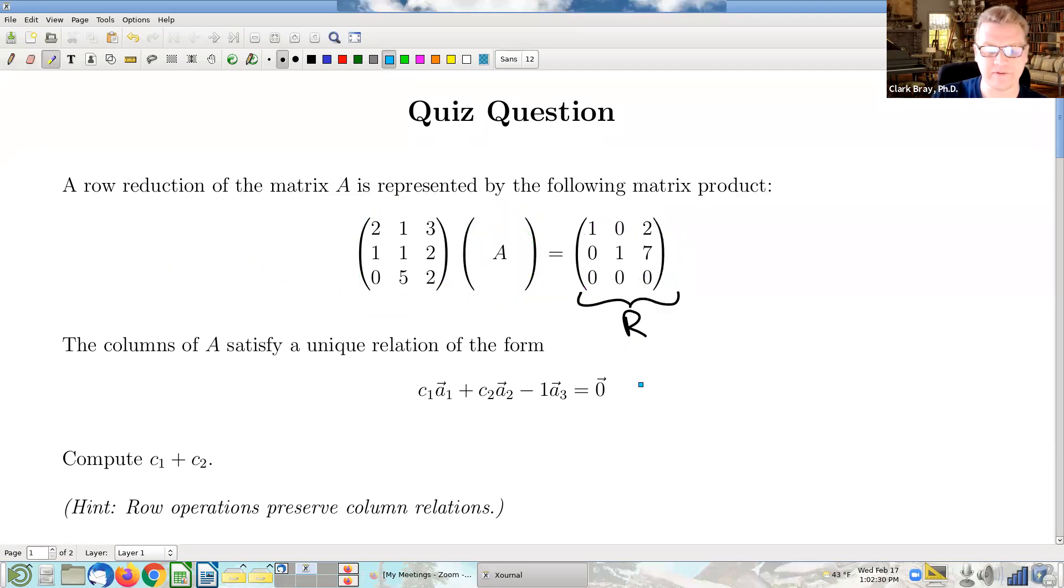This being given, we have some information about the columns of this matrix A. Those columns of A satisfy this relation. So A1, A2, A3 satisfy that given relation. And there's a single unique relation of that form. Okay, so the question then is to figure out what are these numbers, C1 and C2.